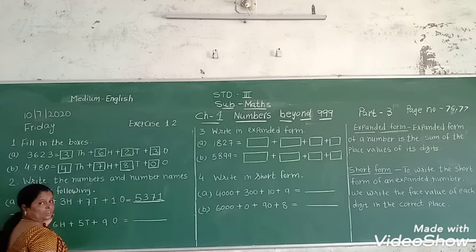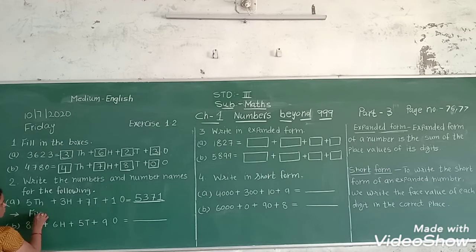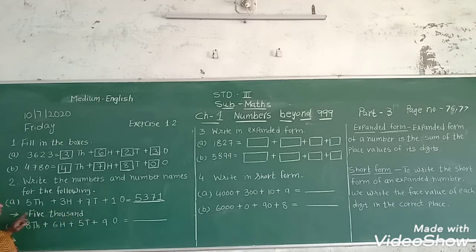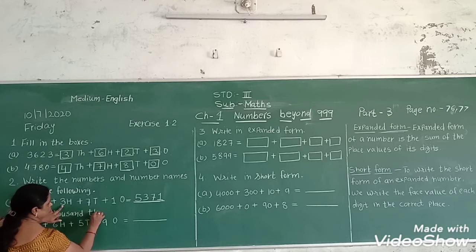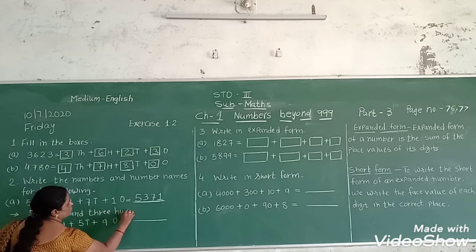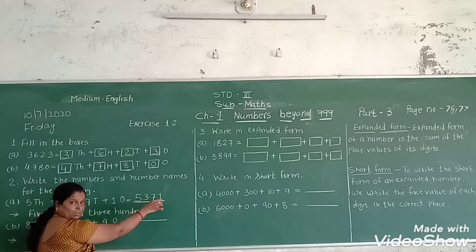Now we write the number. Now we write the number's name: five thousand, three hundred, seventy-one.